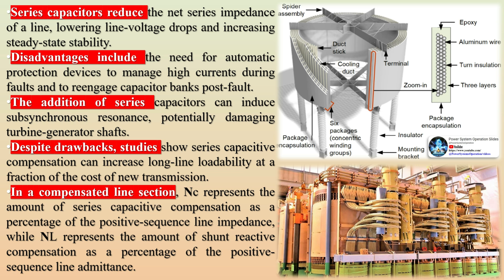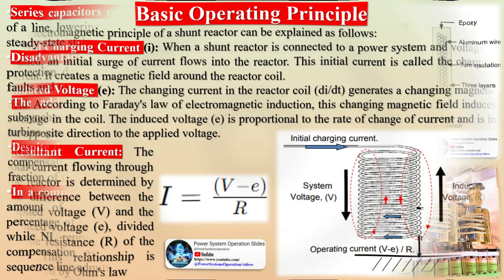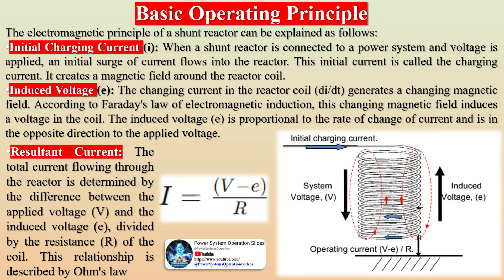When reactive power transfer is minimized, indicating a balance of reactive power across different network segments, a higher level of active power can be transferred within the network. Consequently, the demand for reactors to control overvoltage is highest in weaker power system zones, particularly when the network's short circuit power is relatively low. As the short circuit power increases, the voltage rise diminishes, reducing the necessity for compensation to restrict overvoltage.